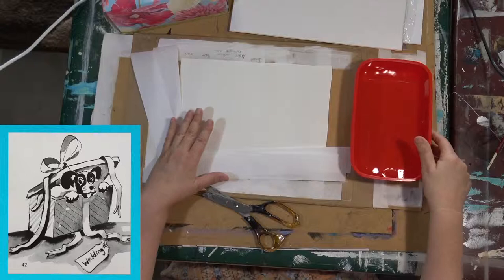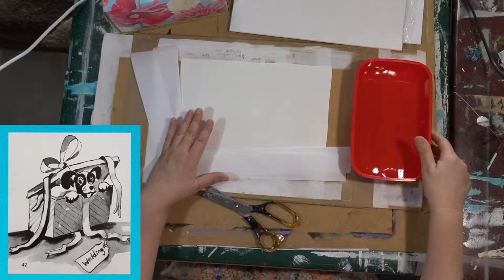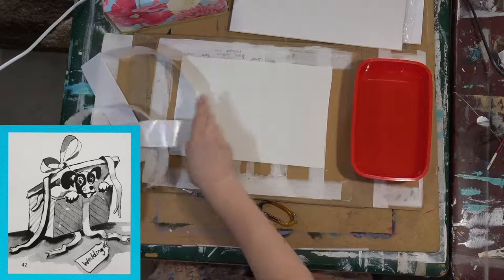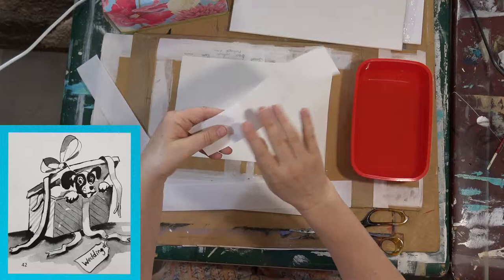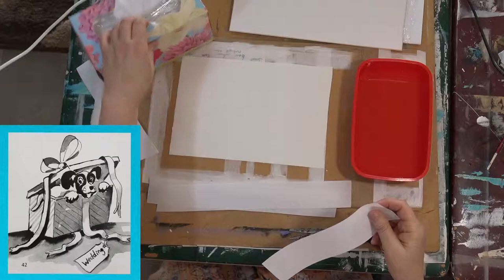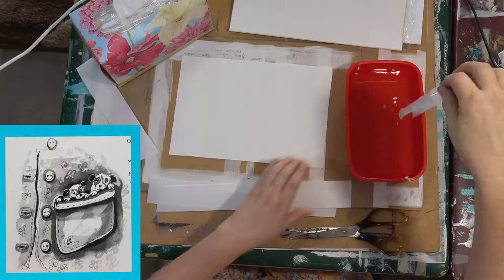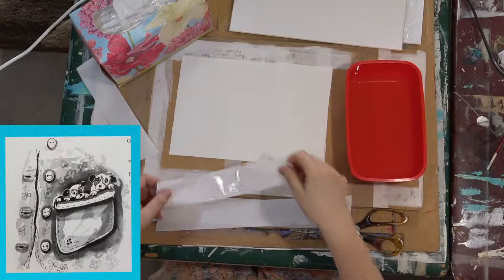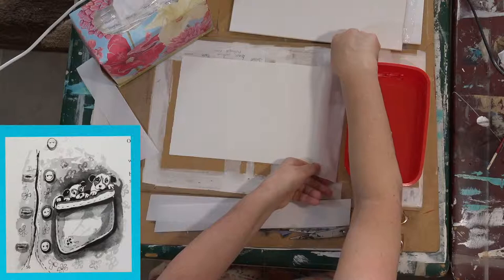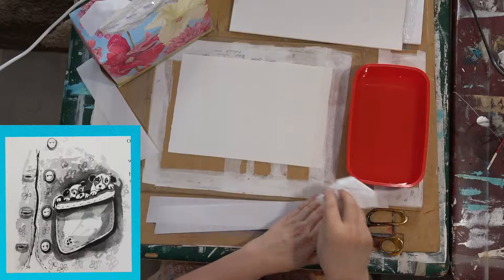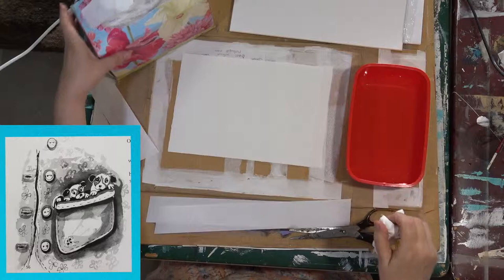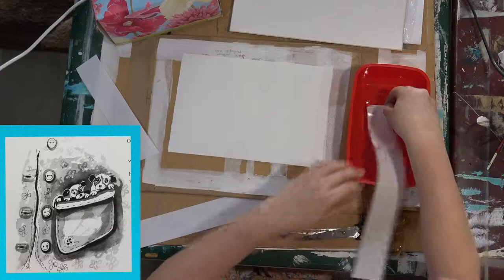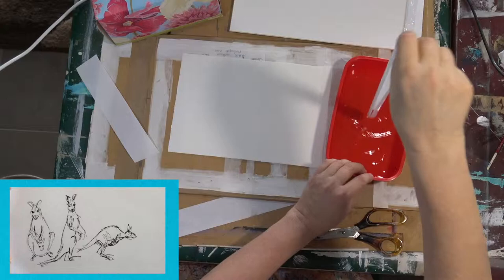I'm going to get some water now. So you look for the glossy side, that's the sticky side, and you have a box of tissues ready. So place and just shake off the excess water. Using a tissue, just wipe along the top pressing quite firmly. Paper can tend to curl sometimes.